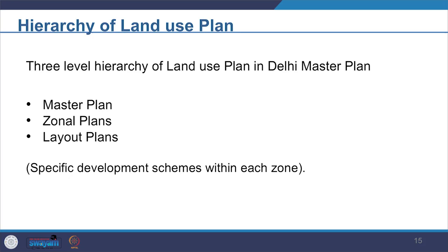Once the development plan is prepared, its proposals can be further implemented by preparing a local area plan. Local area plan improves the implementation of the development plan and allows the realization of development in our neighborhoods. In Delhi, the land use plans could be seen mainly at three levels of hierarchy: first, master plan level; second, zonal plan; and third, layout plans for specific development schemes within each zone.